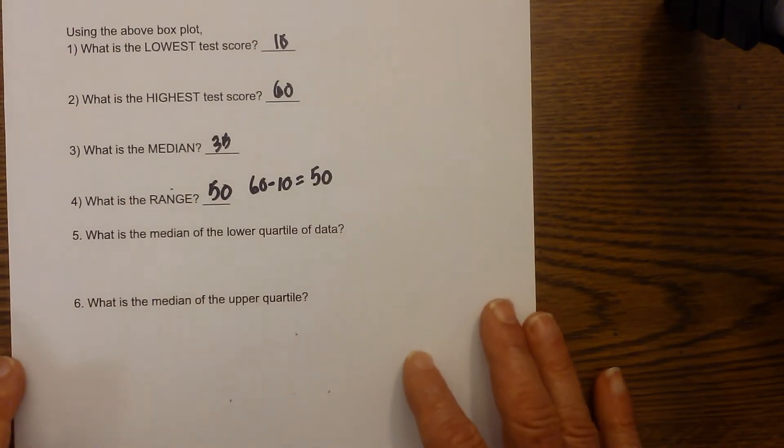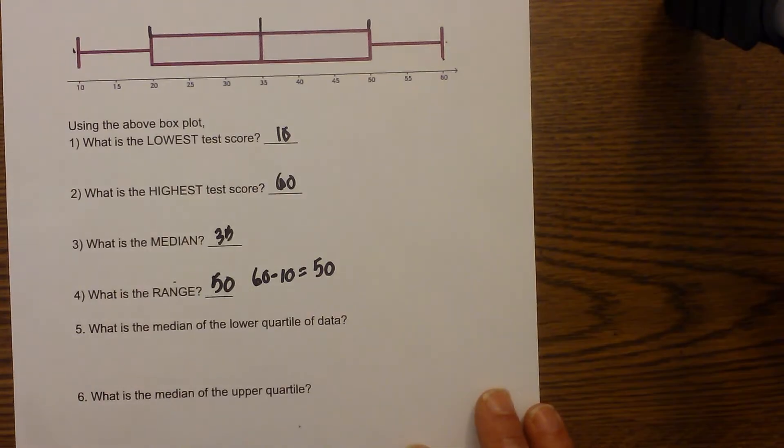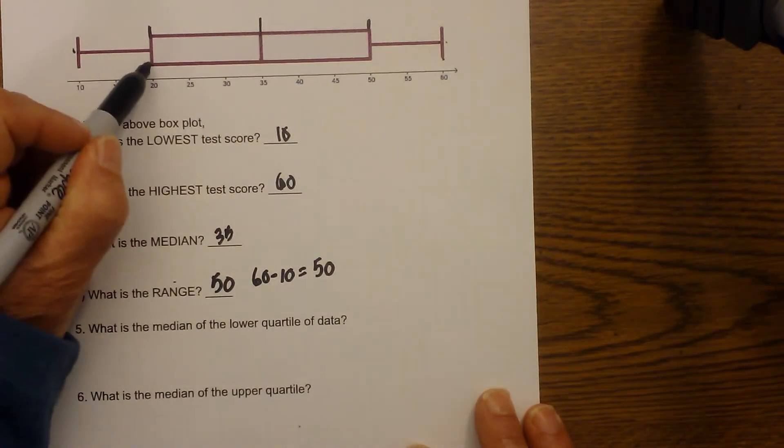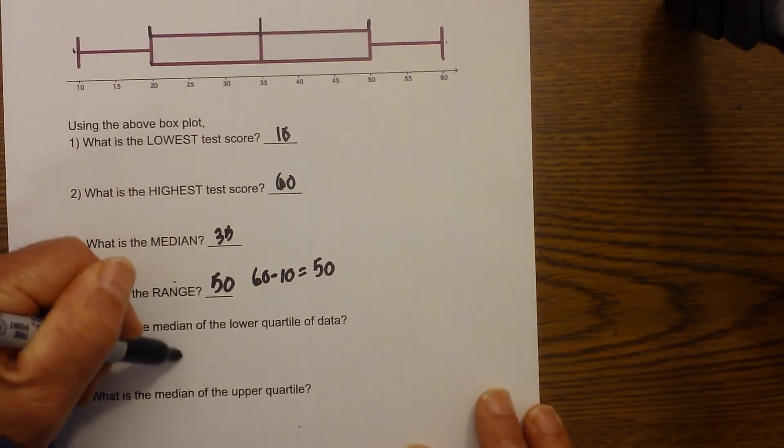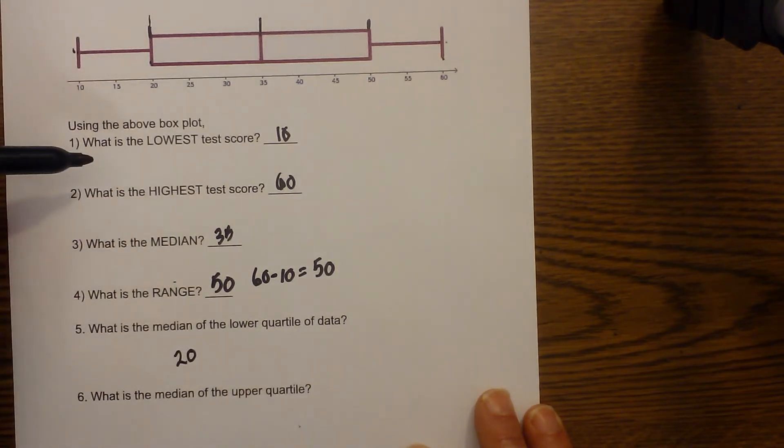Okay, next we have the question, what is the median of the lower range of data? The median is right here, and that would be 20. Lower quartile gives you the median of the lower data.